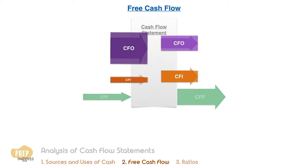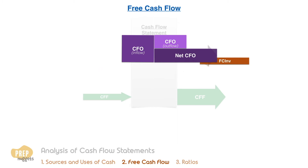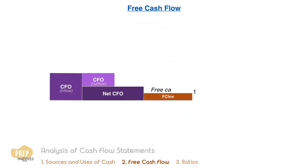CFO is the difference between the cash inflows from operations and the cash outflows from operations. The capital expenditures or fixed capital investments is the difference between cash outflows from investments and the cash inflows from investments. It was mentioned earlier that it is desirable that CFO is sufficient to cover the fixed capital investments. The excess of the net CFO over capital expenditures is known generically as free cash flow.